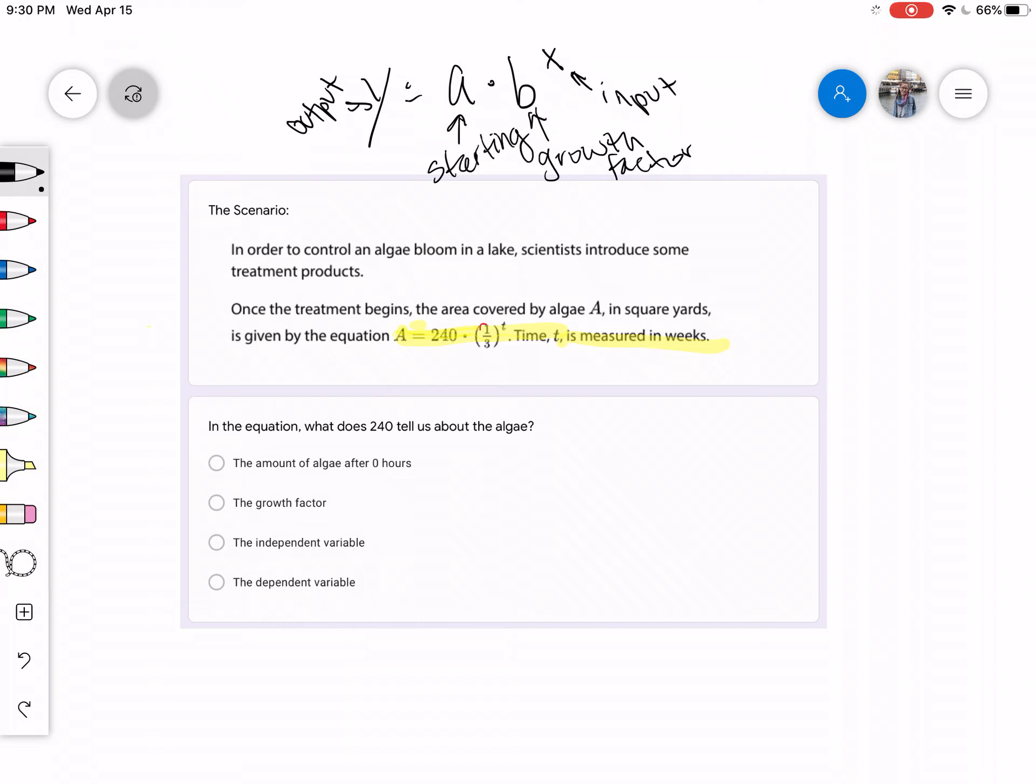So we can look at the equation that they gave us right here to help us answer the first problem. It says, in the equation, what does 240 tell us about the algae? So if I'm looking up in this problem, 240 is taking the place of A, so we know that A is going to be 240 in this equation, and that's the amount of algae after zero hours, or something I like to say starting value.